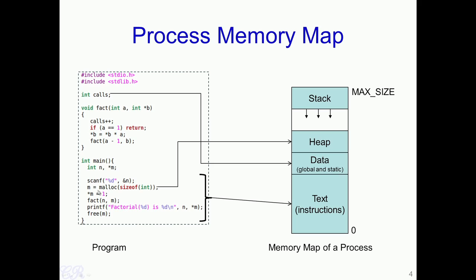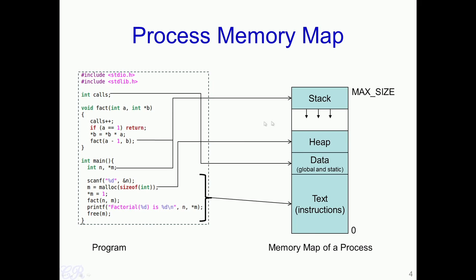The third section is the heap. Any dynamically allocated memory such as M, which is dynamically allocated using malloc, gets created in the heap. The final section is called the stack, which contains all the local variables such as N and M, and also information about function invocation. For example, in this case we have a recursive function which is getting invoked, so all this information is present in the stack.